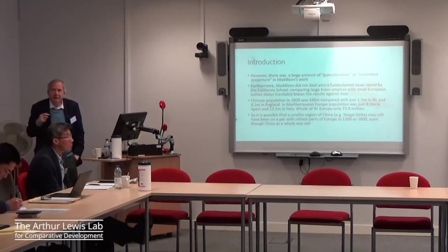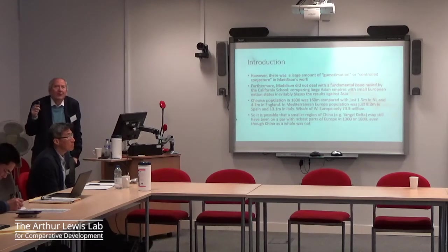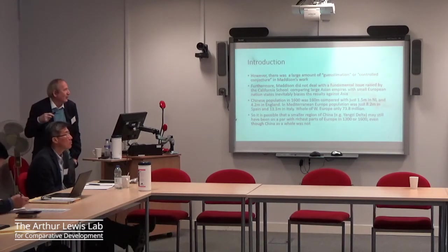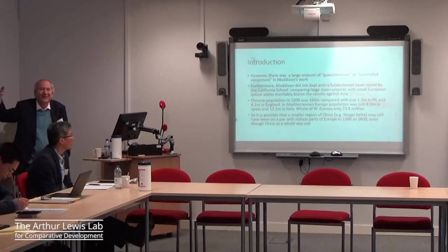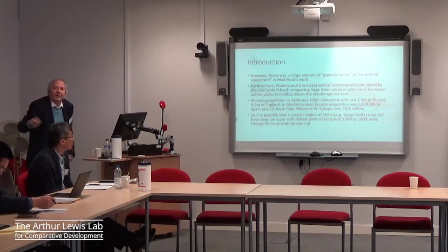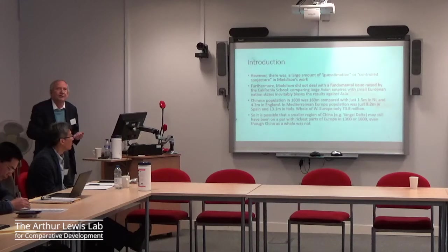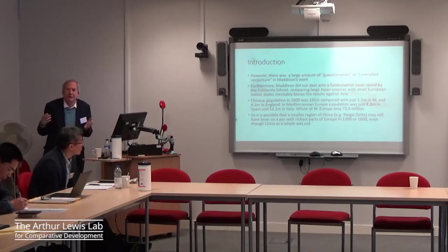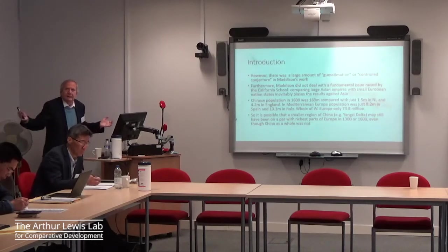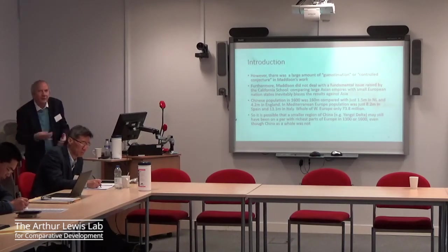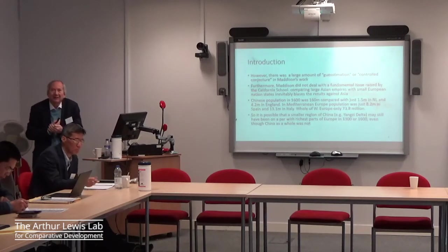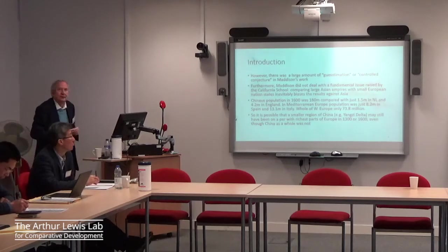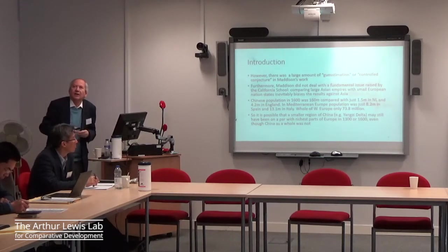Maddison also didn't deal with another issue which I think was probably the most important aspect of the California School's work. In a conversation with Richard Von Glan on a boat tour in Istanbul, he said the really important thing about the California School is the initial variation. You have large empires in Asia — China and the Mughal empire in India — massively larger than European nation states.